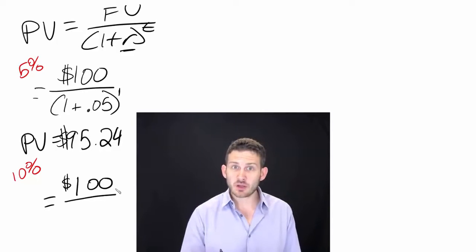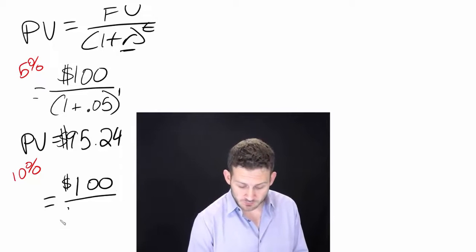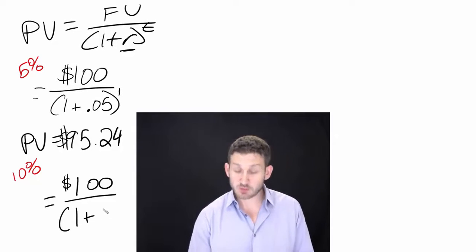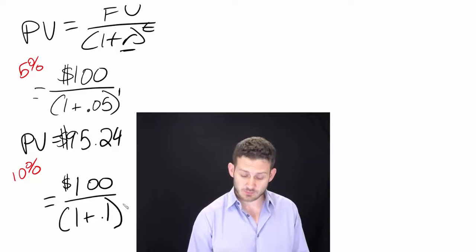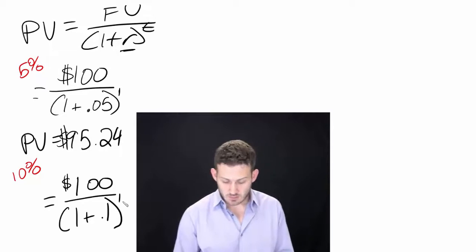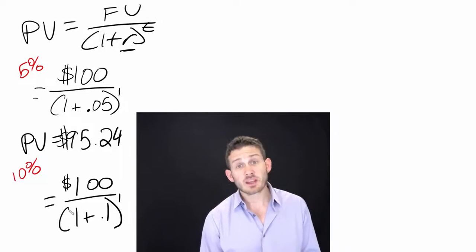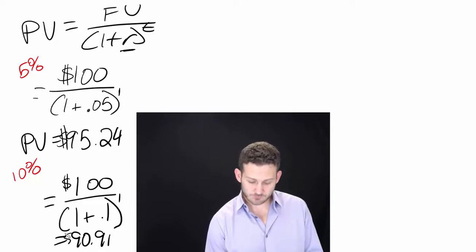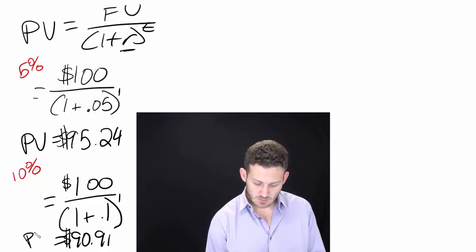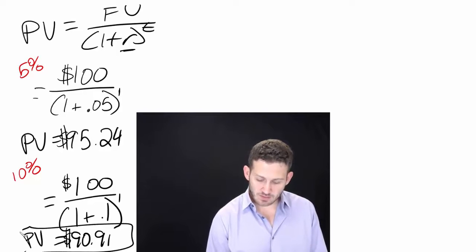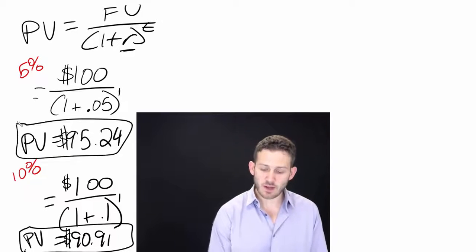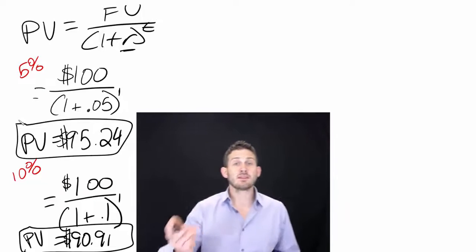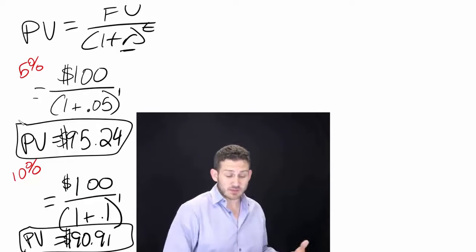We'll just check that here on our math. What we're going to have here is 1 plus 0.1 for 10%, and that's raised to the first power, which means that it's going to be worth $90.91. We have a present value of $90.91. We had a present value before of $95.24, and that is the difference there. We had a 5% discount, now we're at a 10% discount.